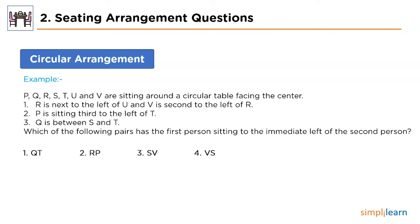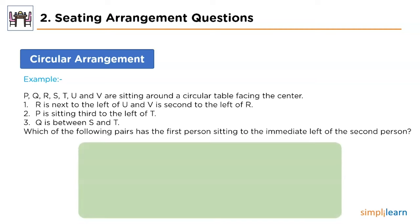We'll add a circular shape with seven placeholders representing the seven persons. Looking at the first condition, we fix R at a random placeholder, then place U to the right of R. The second half of the first statement says V is second to the left of R, so we place V at that position.